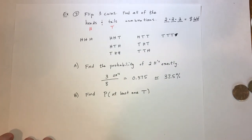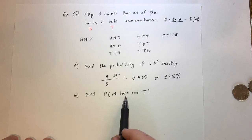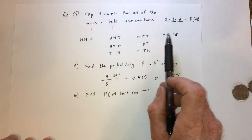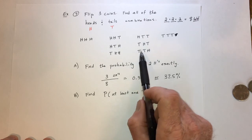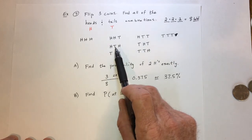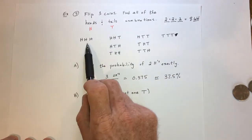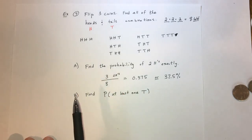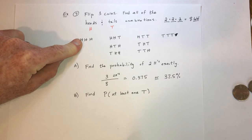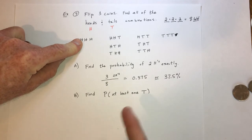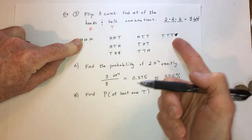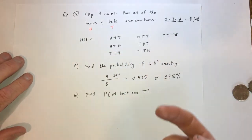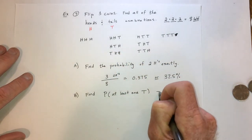For part B, what's the probability of at least one T? Anytime the letter T shows up anywhere, it counts. The only outcome without a T is HHH. So there are seven out of eight outcomes that have at least one T, making the probability seven out of eight.